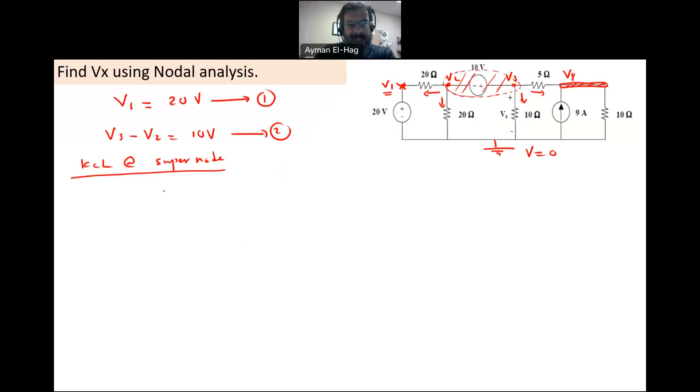So here, the current to the far left, we have V2 minus V1 divided by 20. Now V1 itself is 20 volts. So I don't need to write it as V1. We can keep it as 20 volts plus V2 divided by 20. Actually it's V2 minus zero, because this voltage here is zero, over 20. So these are the two items at the side of V2.